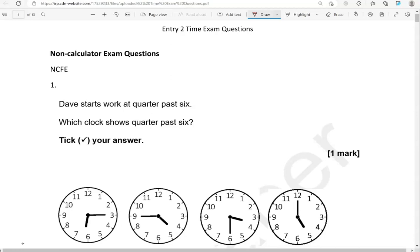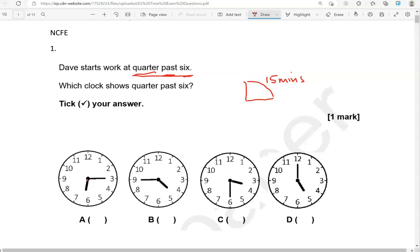Here is the first one. Dave starts work at quarter past six. Which clock shows quarter past six? Tick your answer. Quarter, that looks like this. Quarter of an hour, and that's 15 minutes. So that is 15 minutes past six o'clock. So the short hand should point at six. If we look at option A, short hand is roughly at six, and the minutes hand, that is quarter past. So option A is the correct one.